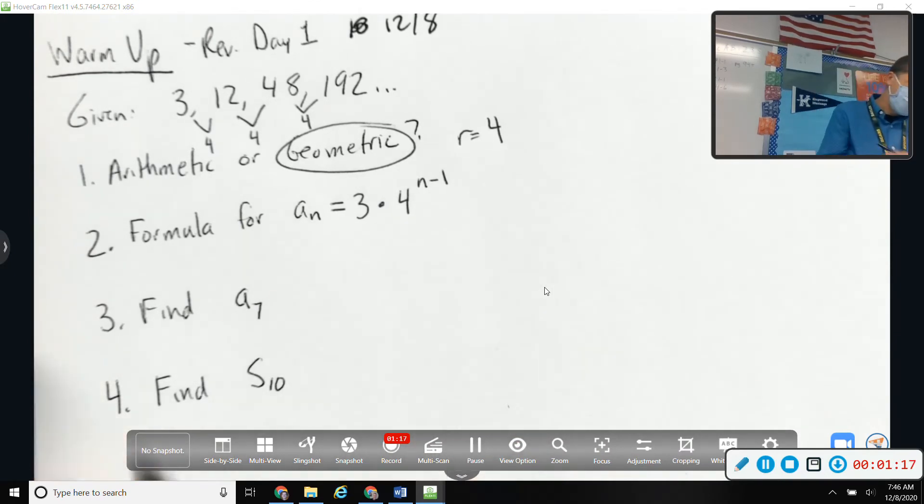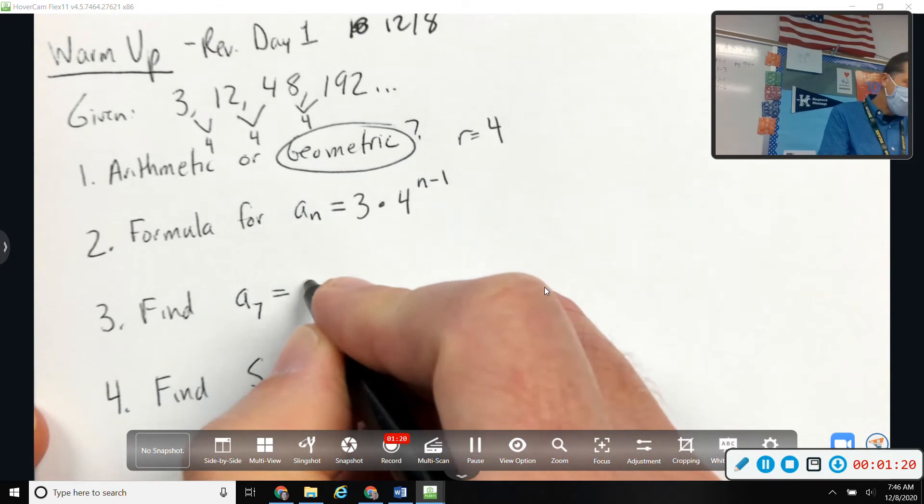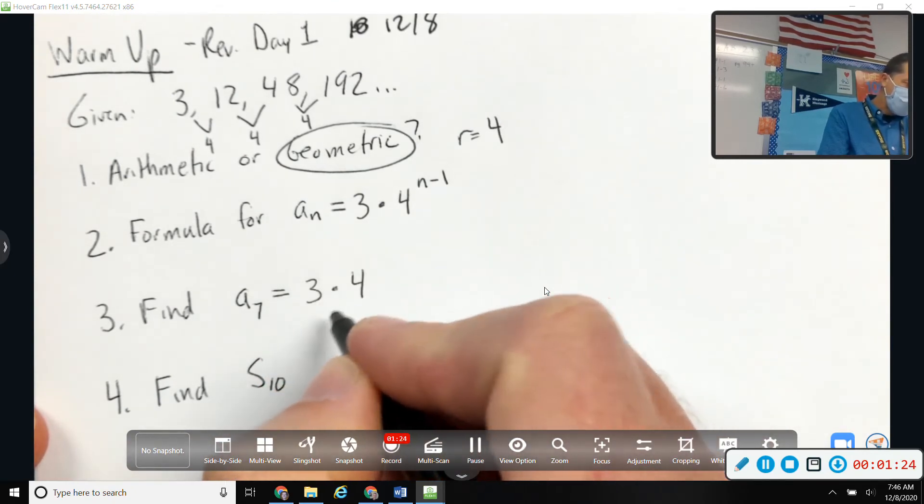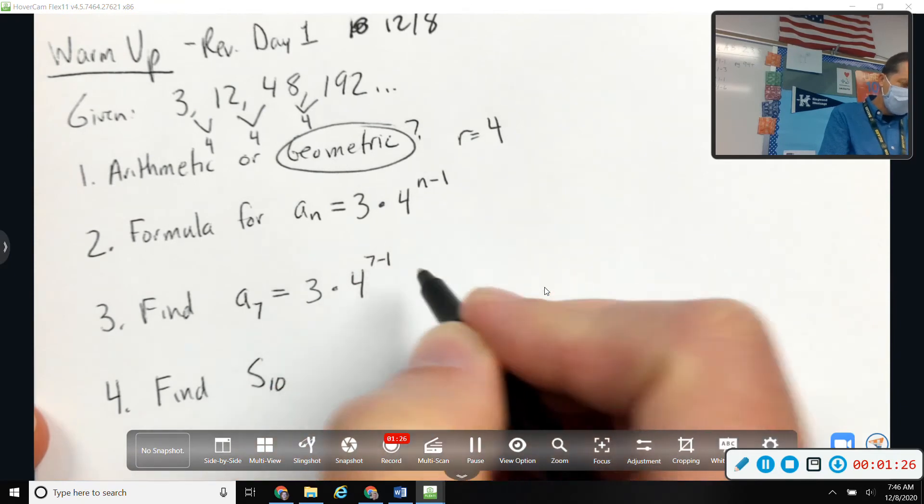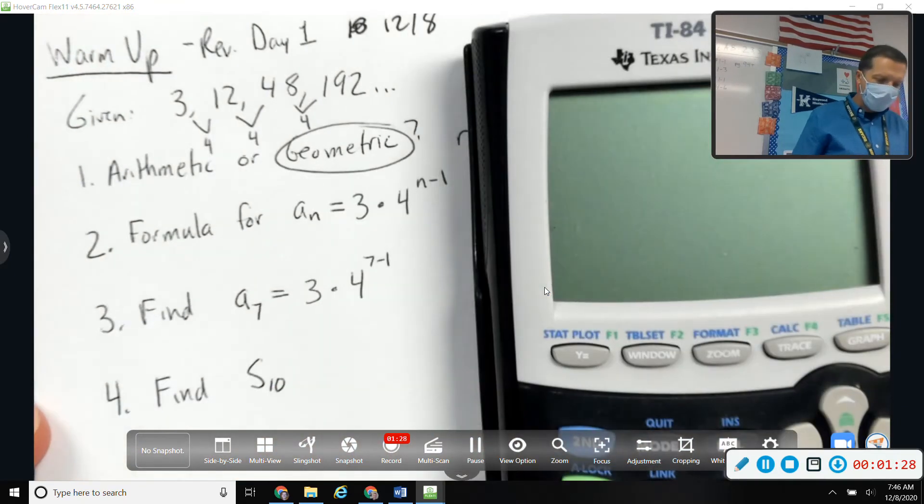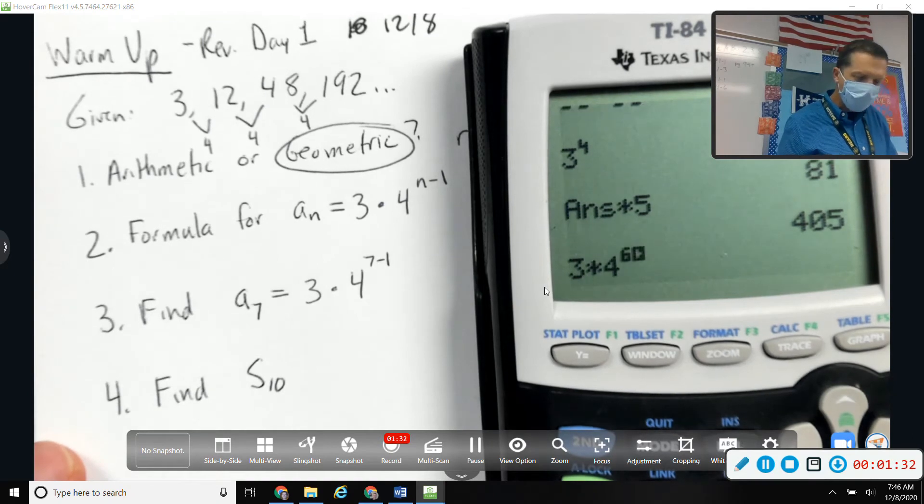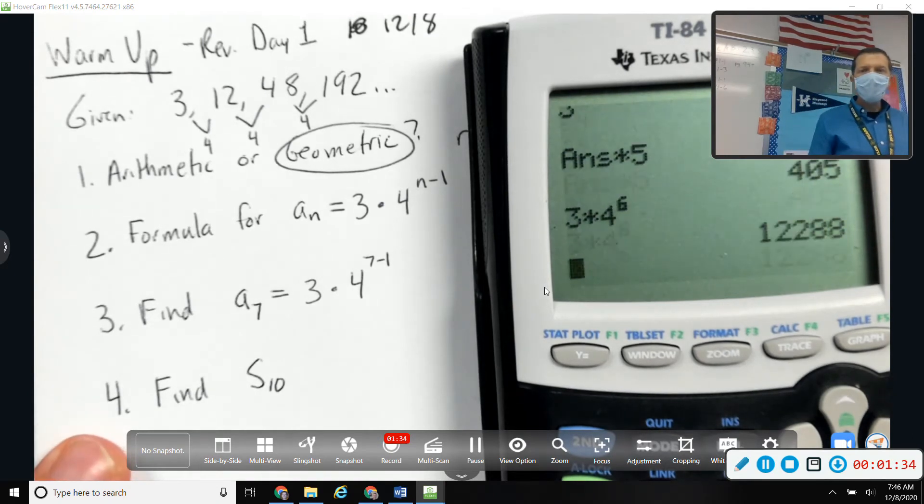a₇, I will use the formula that we just came up with: three times four to the seven minus one. So yeah, that's going to be a big number. Three times four to the sixth is twelve thousand two hundred eighty eight.